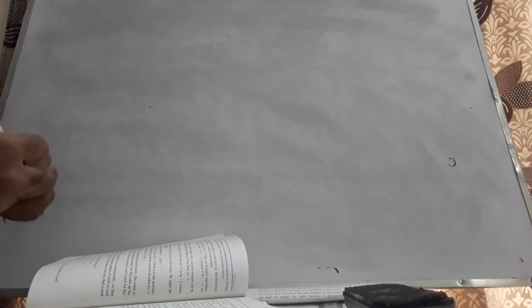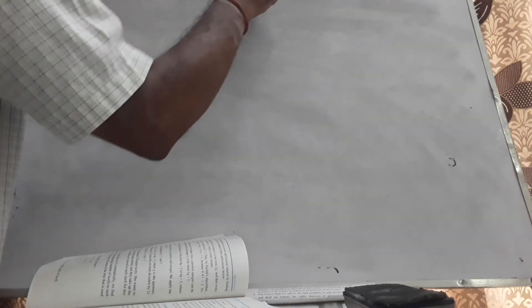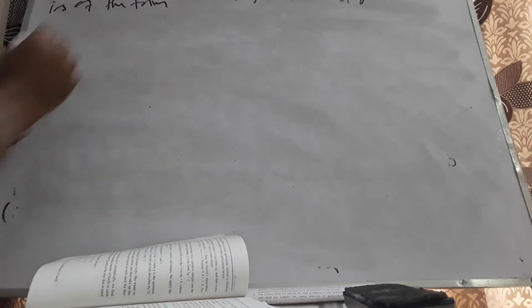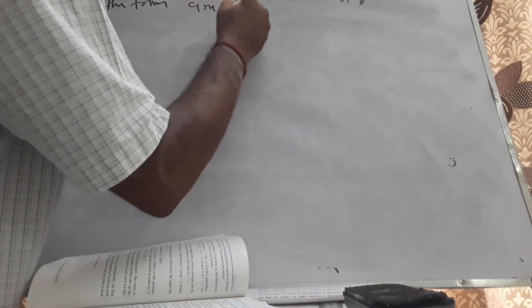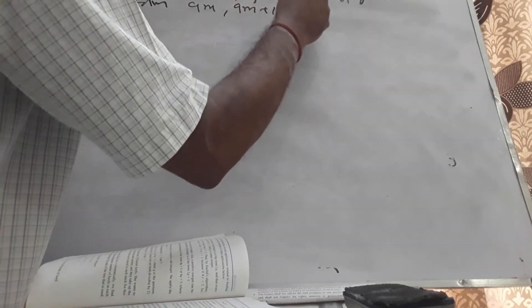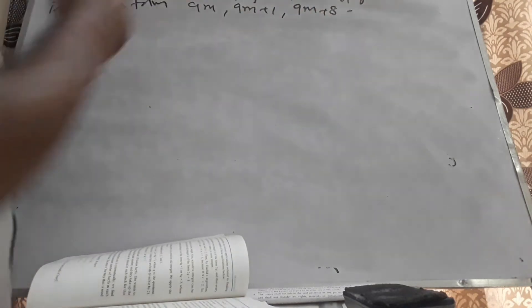Next problem: show that the cube of any positive integer is of the form 9m, 9m+1, or 9m+8.